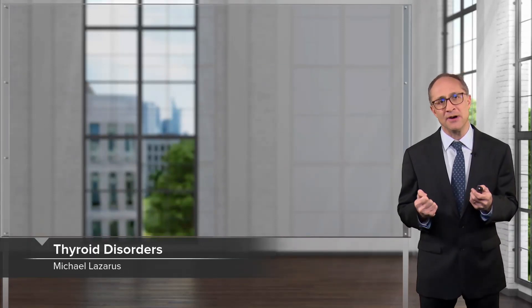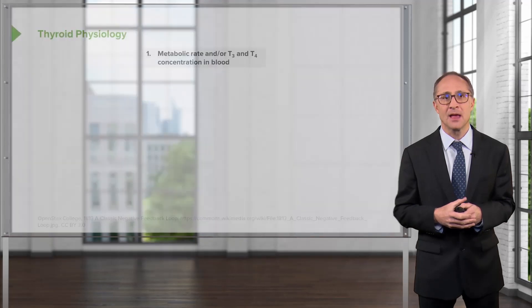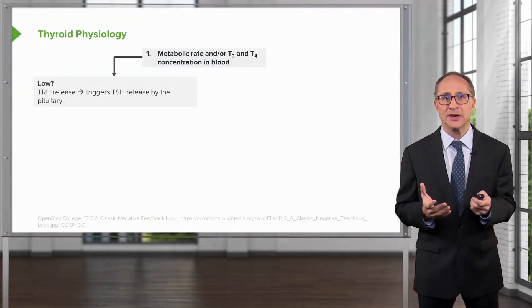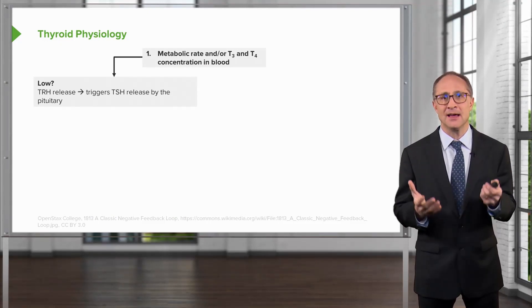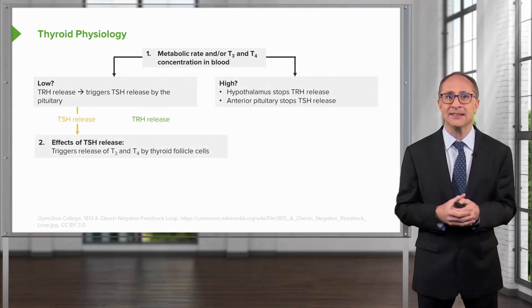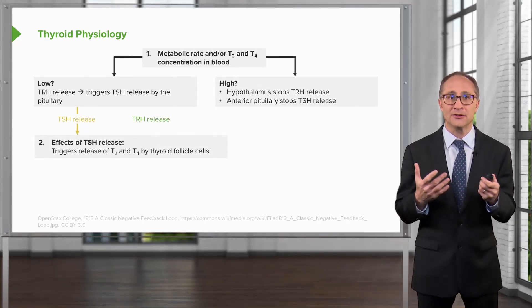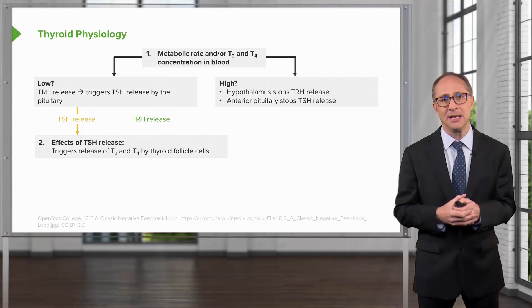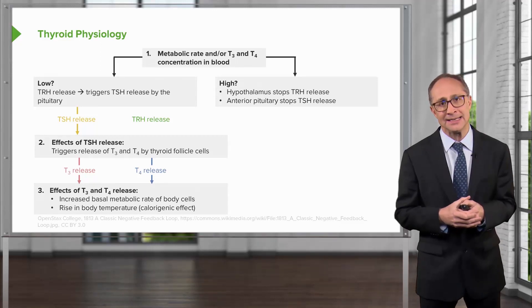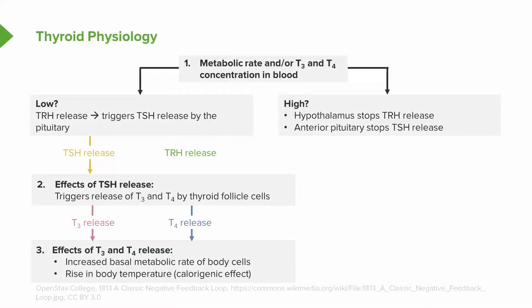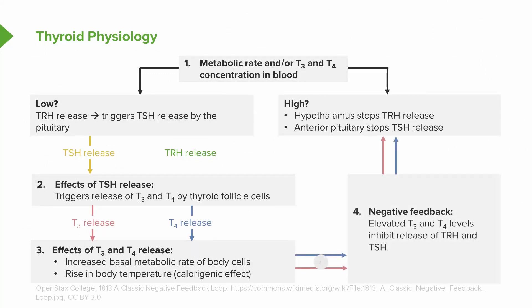Today we're going to talk about thyroid disorders. Let's start by revising some of the thyroid physiology. Hypothalamic thyroid releasing hormone triggers the pulsatile release of TSH — thyroid stimulating hormone — from the anterior pituitary. This activates thyroid cell growth, has a role in affecting iodide metabolism, and also causes the synthesis of thyroid hormone within the thyroid gland, which mainly manifests as T4 and T3. T4 and T3, once produced, then feed back negatively on the hypothalamus to reduce TSH.